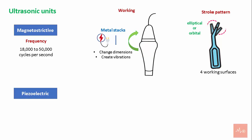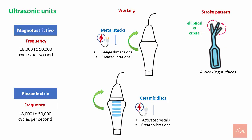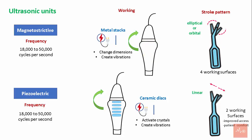Piezoelectric ultrasonic scalers work at a frequency of 18,500 to 50,000 cycles per second. They consist of ceramic discs that change dimensions when electric energy is applied. The tips move in a linear pattern, giving two working surfaces. These tip designs allow improved access in many areas, including furcations, and the slim design with lower power settings improves patient comfort.